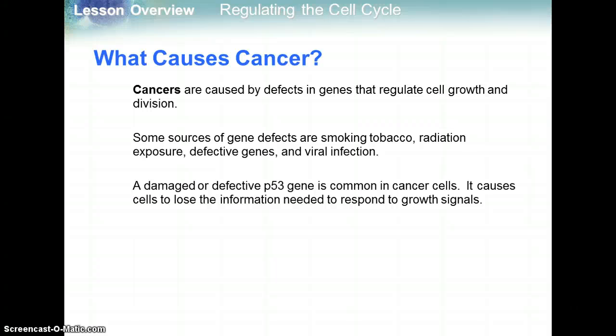Cancers are caused by defects in genes that regulate cell growth and division. Some sources of gene defects include smoking and tobacco, radiation exposure such as UV radiation from the sun or long exposure to X-rays, defective genes, and viral infections — like human papillomavirus associated with cervical cancer. A damaged or defective p53 gene is common in cancer cells. p53 is a gene for regulating cell cycles and cell growth, and its loss causes cells to lose the information needed to respond to growth signals.